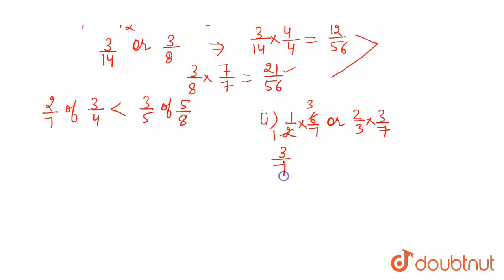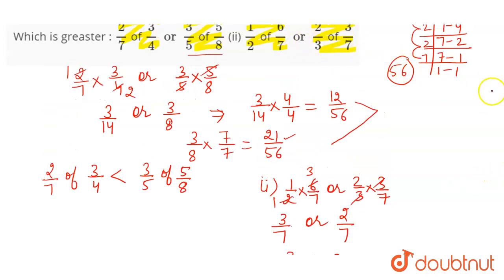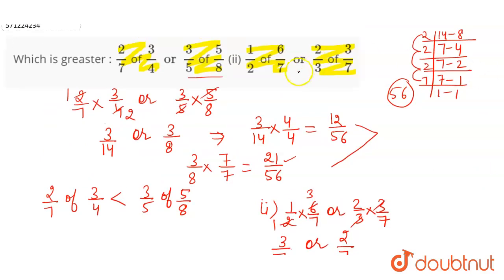So the fraction will be 3 by 7, or 3 got canceled, 2 by 7. So clearly, we can see 3 by 7 is greater than 2 by 7. So we can say that 1 by 2 of 6 by 7 is greater than 2 by 3 of 3 by 7.